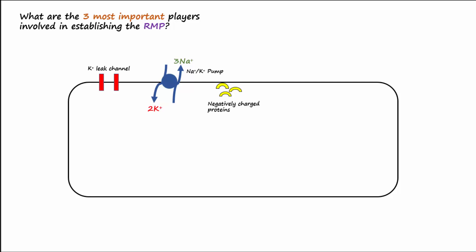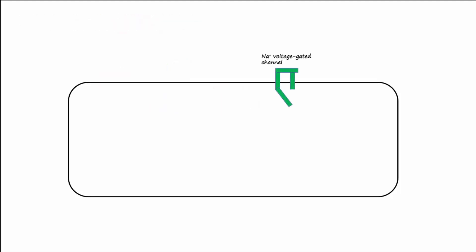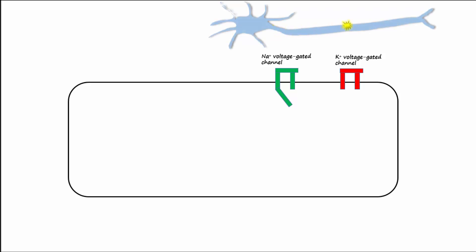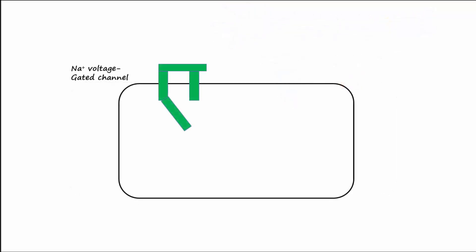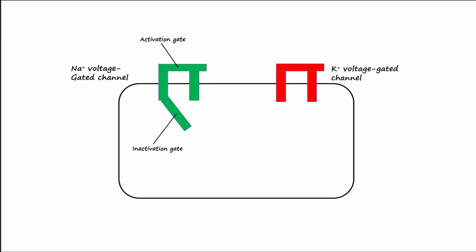Now let's talk about voltage-gated channels. These channels include the sodium voltage-gated channels and the potassium voltage-gated channels, which allow an electrical signal to travel the length of the neuron. We call these traveling electrical signals action potentials. The sodium voltage-gated channels have two gates: an activation gate on the outside of the cell membrane, and an inactivation gate on the inside of the membrane. Potassium voltage-gated channels just have one gate located on the outside of the cell membrane.